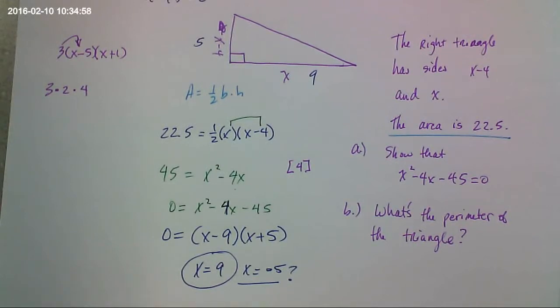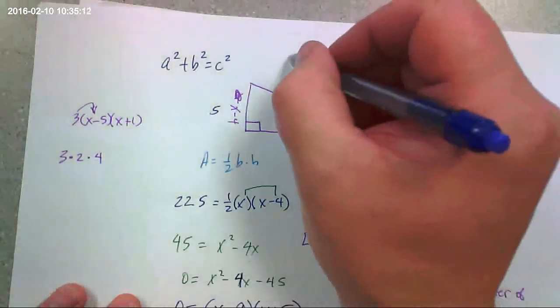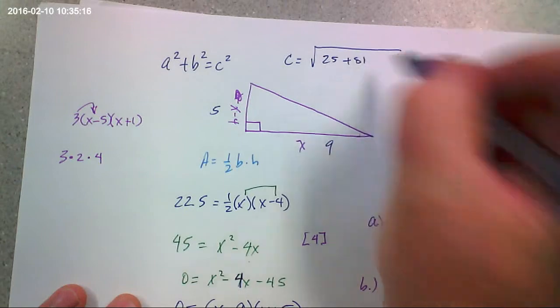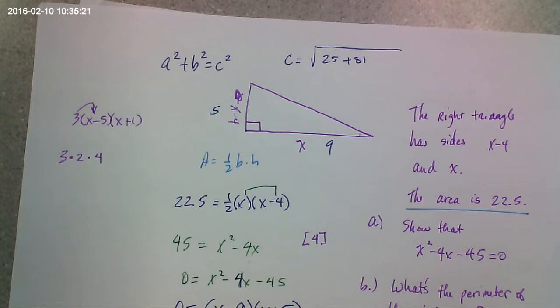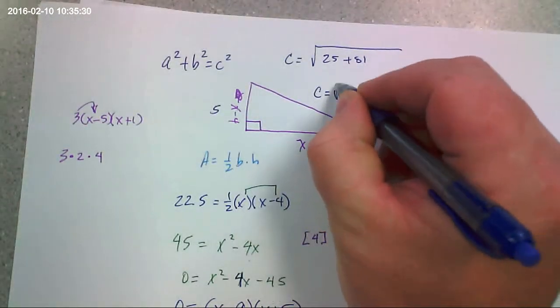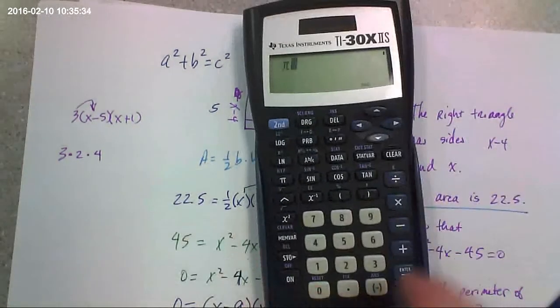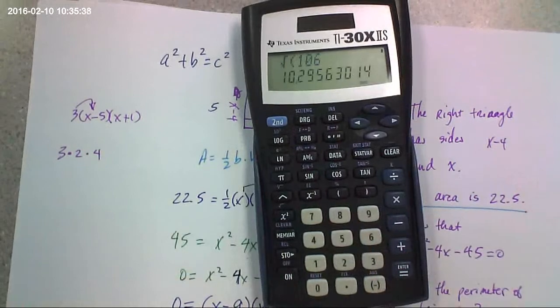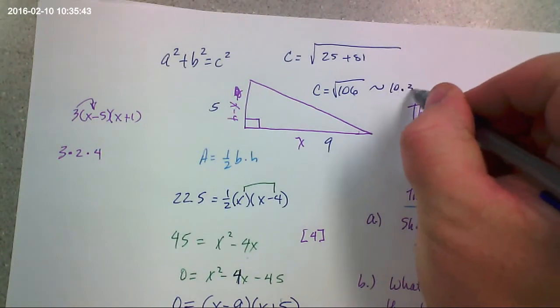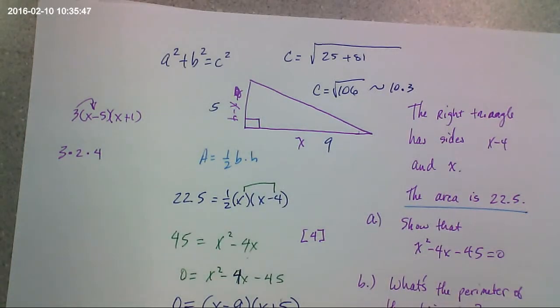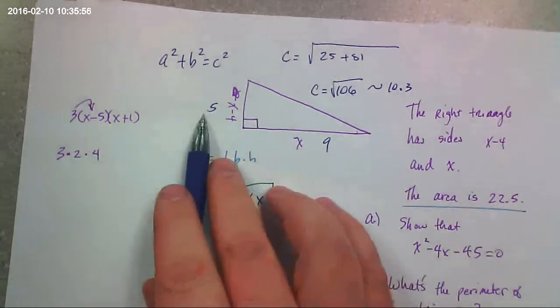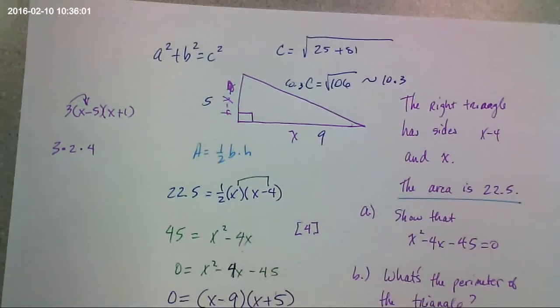So now, can you figure out the hypotenuse? Yeah. How? So you're going to use this, right? So you're going to have c equals the square root of 25 plus 81. Is that true? Yeah, George, I just solved for c. And what is that? 106. Square root 106. 10.3. So what's the perimeter? 24.3. Do you guys agree? How did you get the perimeter was 24.3? 9 plus 5 plus 10.3. So 24.3.